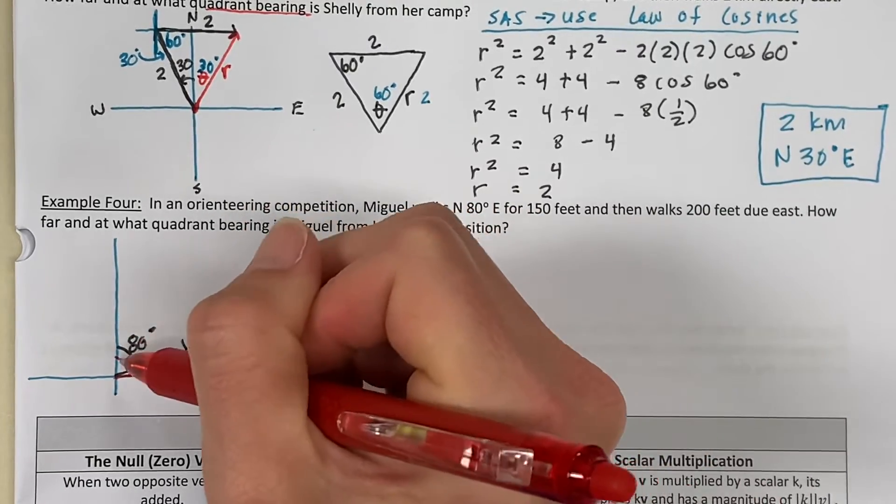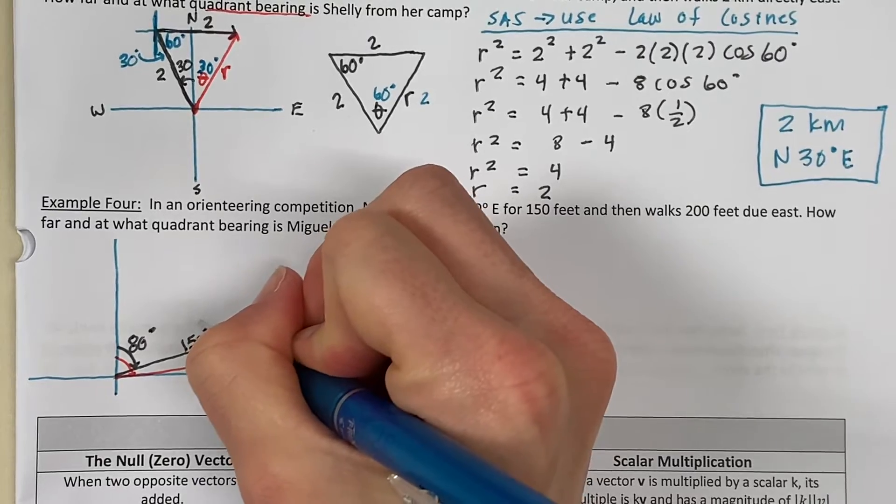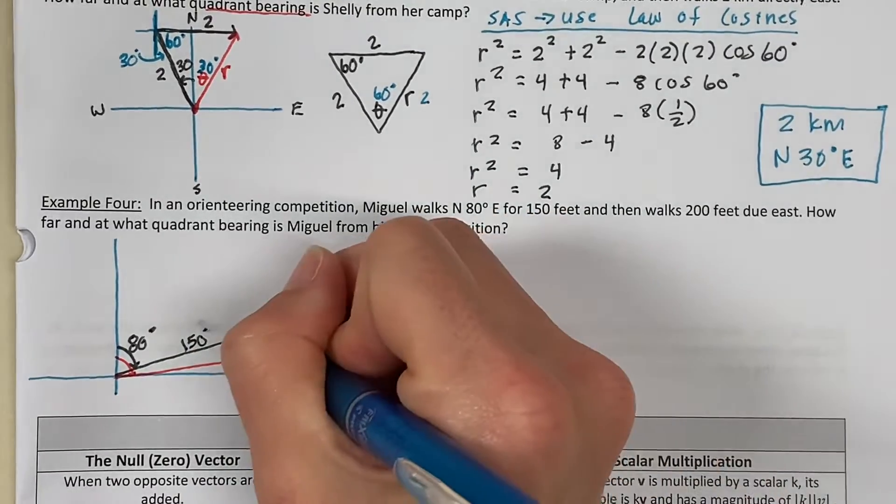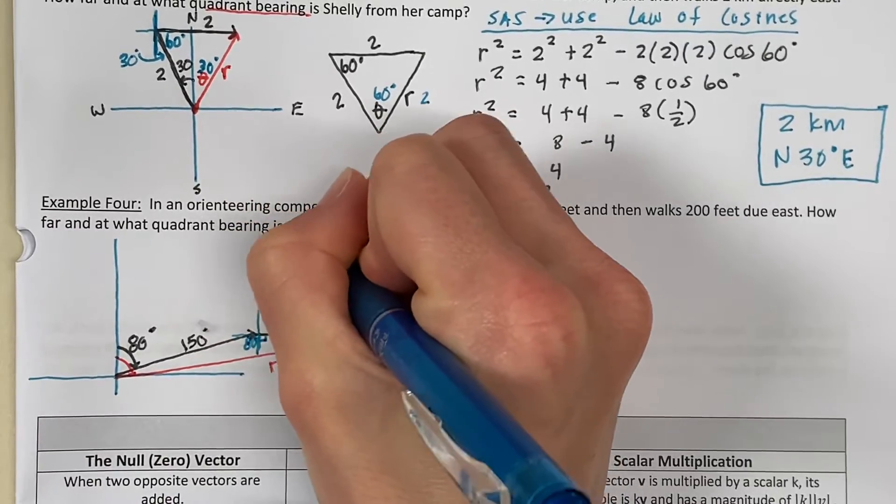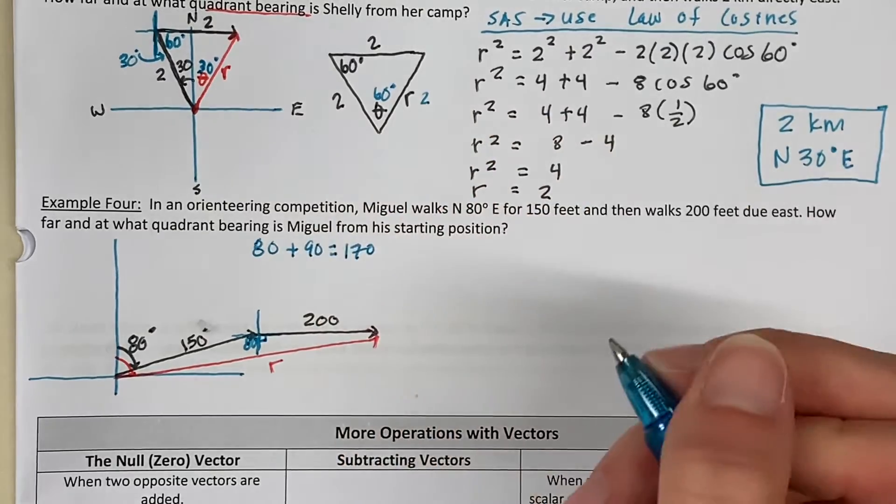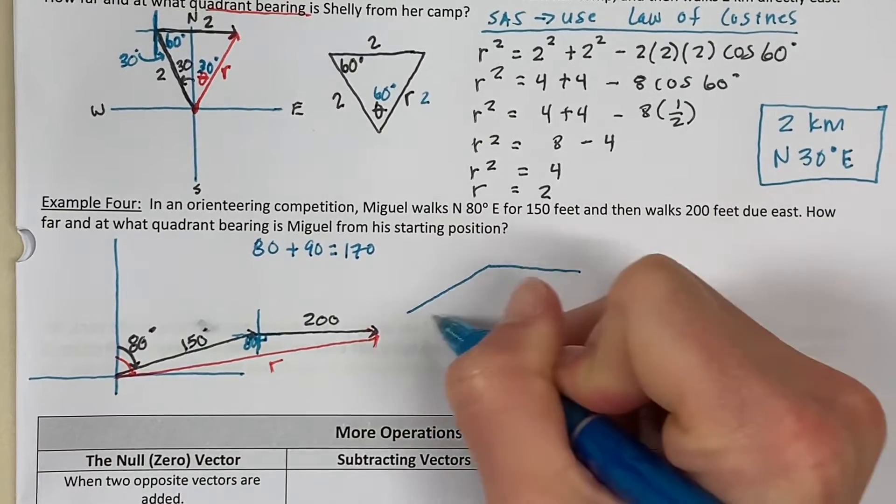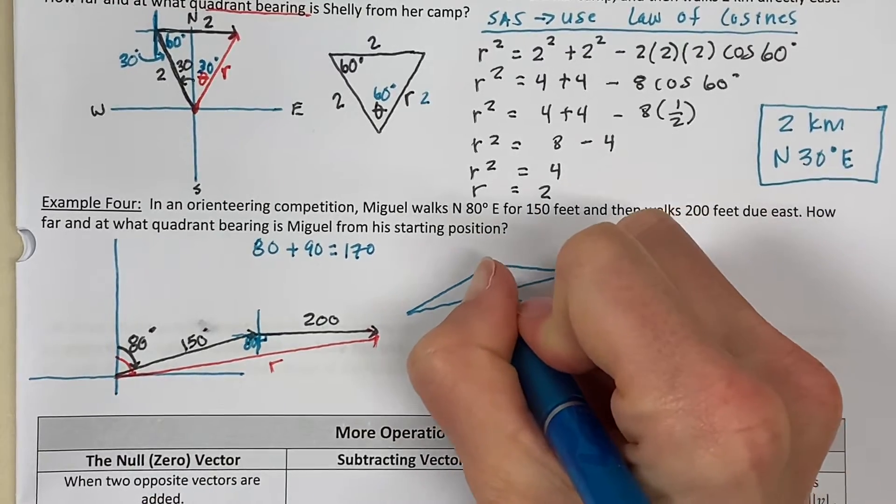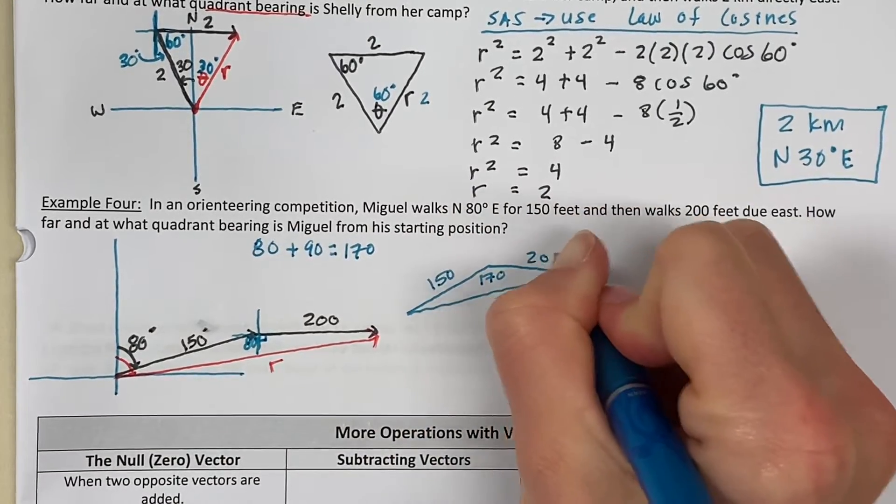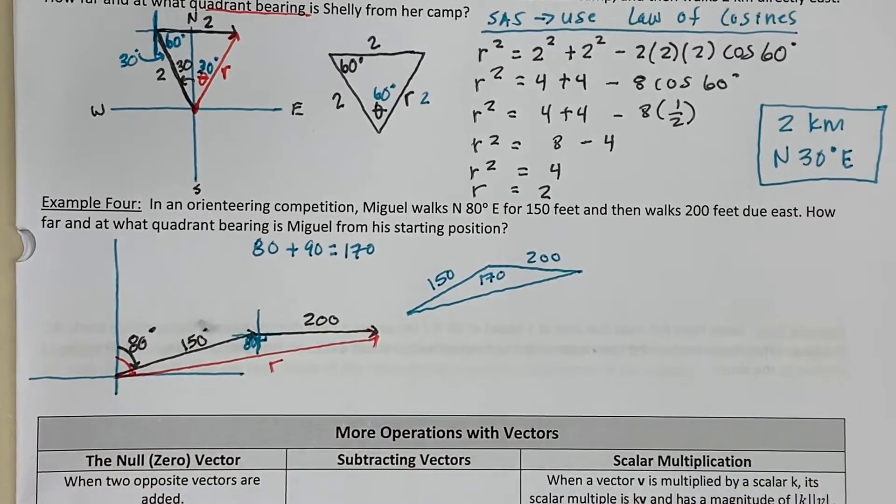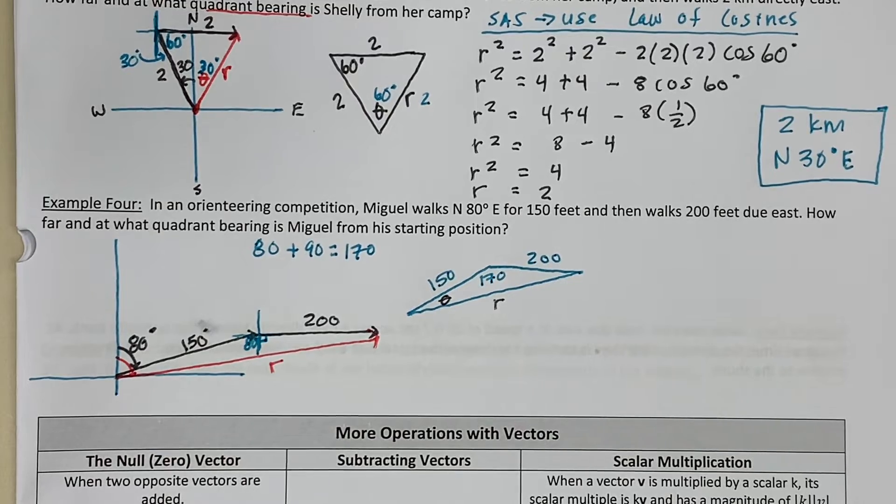Notice these two lines are parallel. So, I know that my alternate interior angles are congruent. So, if this angle is 80, then this angle inside of here is also 80. Now, this angle right here is a right angle. It's the entire lower left quadrant. So, if I take 80 plus 90, that obtuse angle is 170 degrees. So, when I'm thinking about this triangle, this angle right here is 170 degrees. Where this is 150 and this is 200. I need to find the resultant vector and this angle theta. Again, I'm going to use law of cosines.